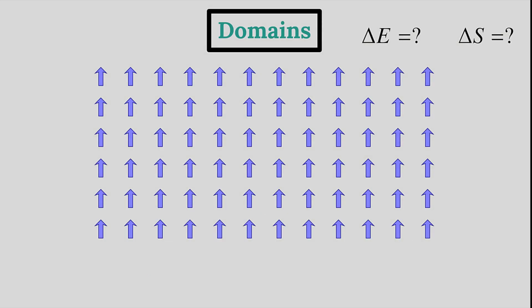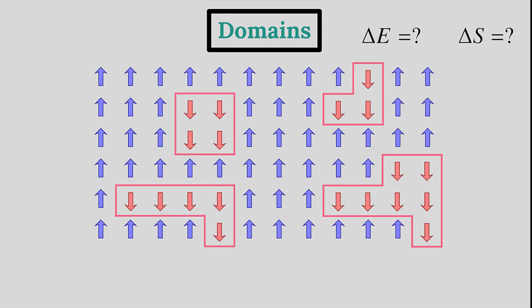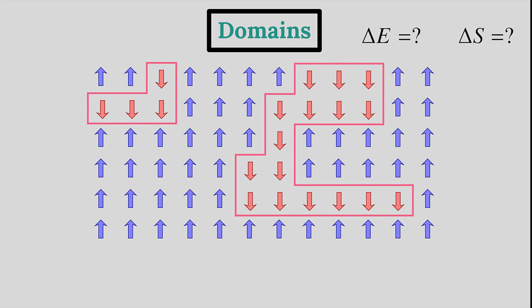Let's start at a low temperature state where all the spins are aligned to minimize the energy. A domain is a smaller region inside the lattice where all the spins are oriented the same. They are caused by thermal fluctuations and can be characterized by closed polygons of perimeter L.